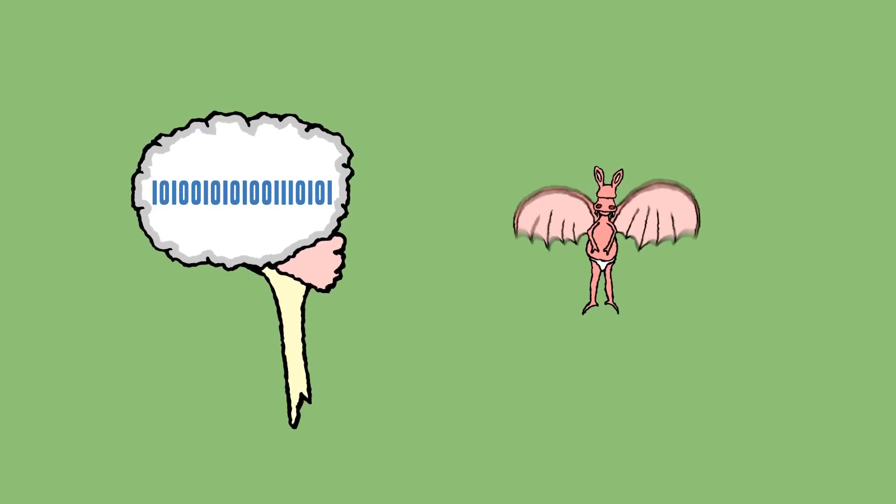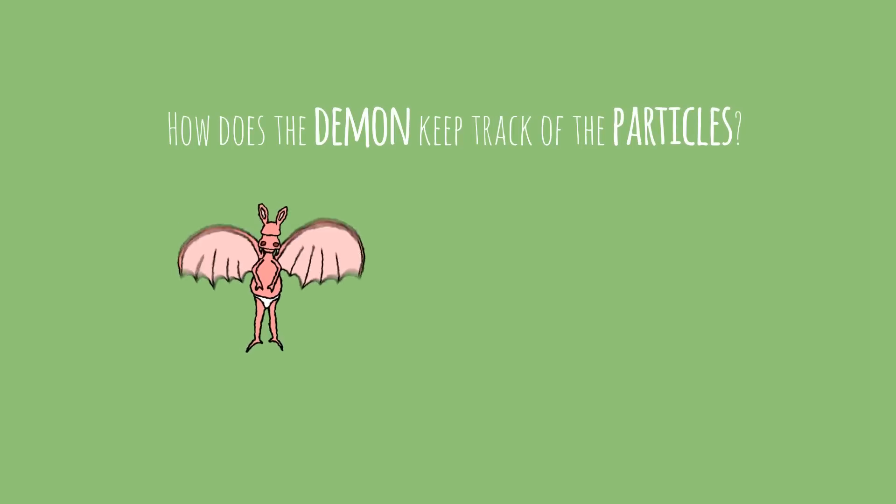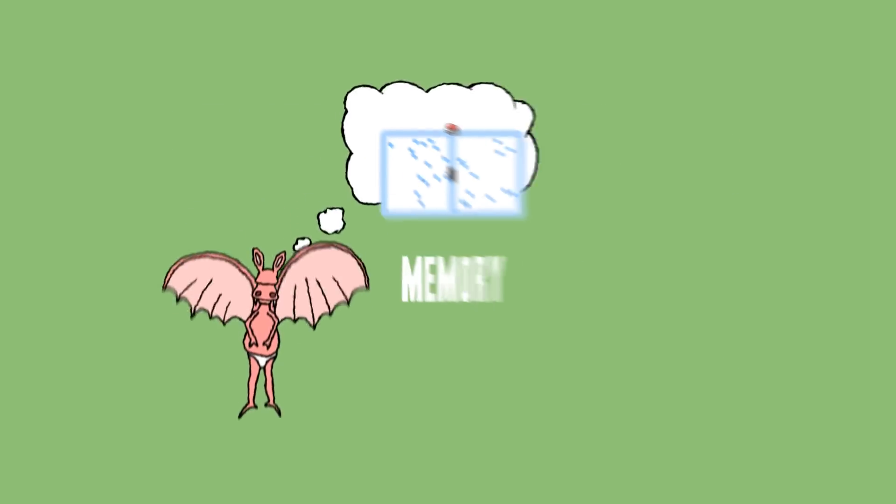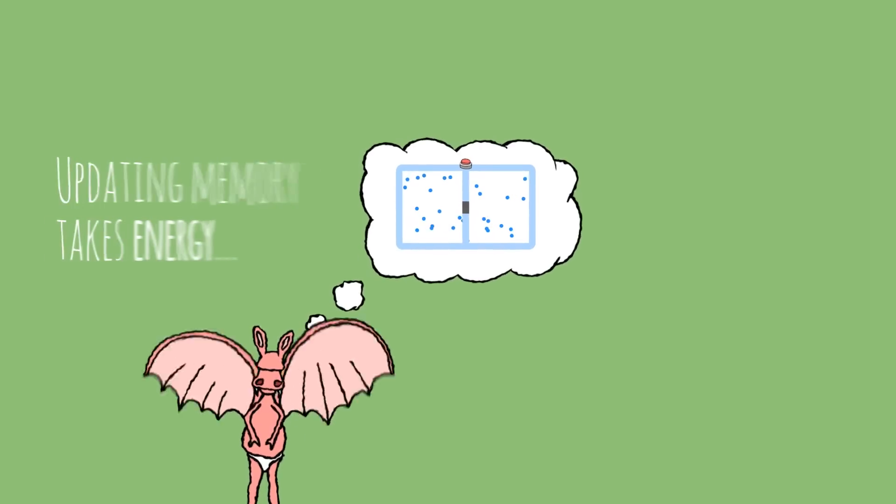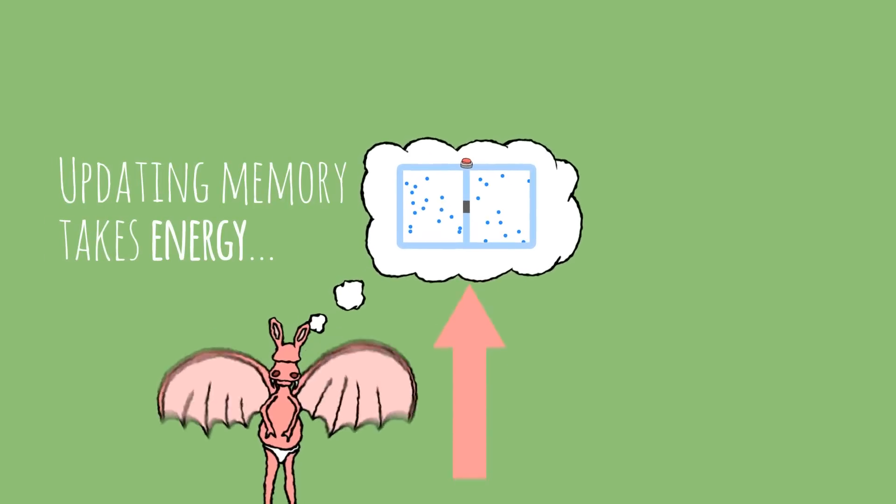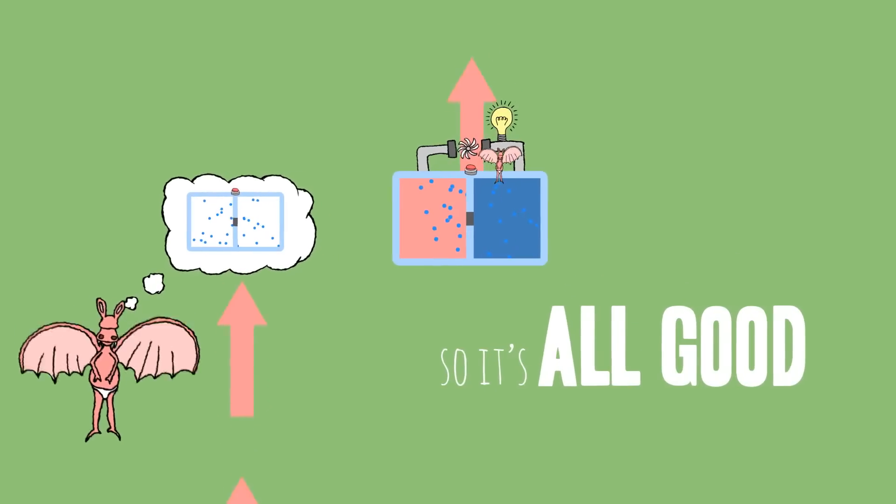If information is really just in our minds, then yeah, this is totally impossible. But how does the demon keep track of the particles? He needs memory. It turns out that keeping his memory up to date with new information takes energy. In fact, it's the same amount of energy that you get out of the box. So he's not actually breaking the laws of physics.